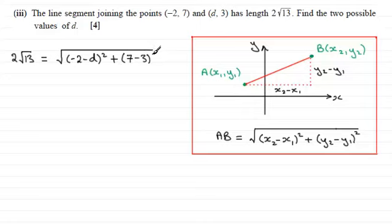Now if we just square both sides, then we're going to have 2² which is 4 multiplied by 13. I'll just leave it as 4 × 13 at this stage.